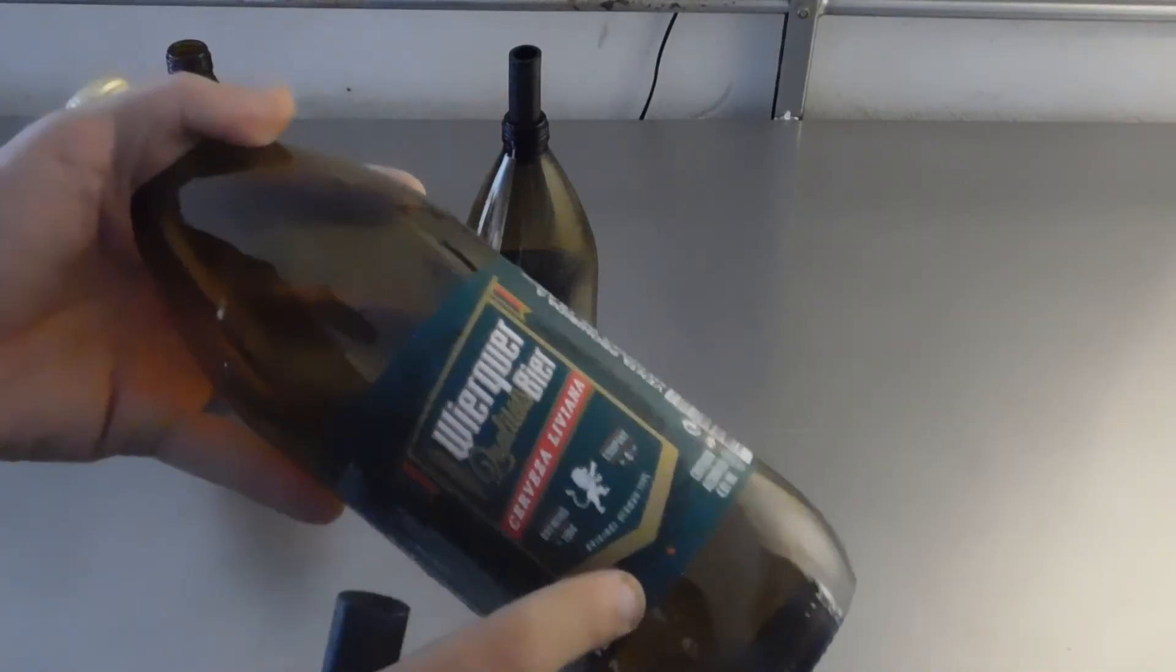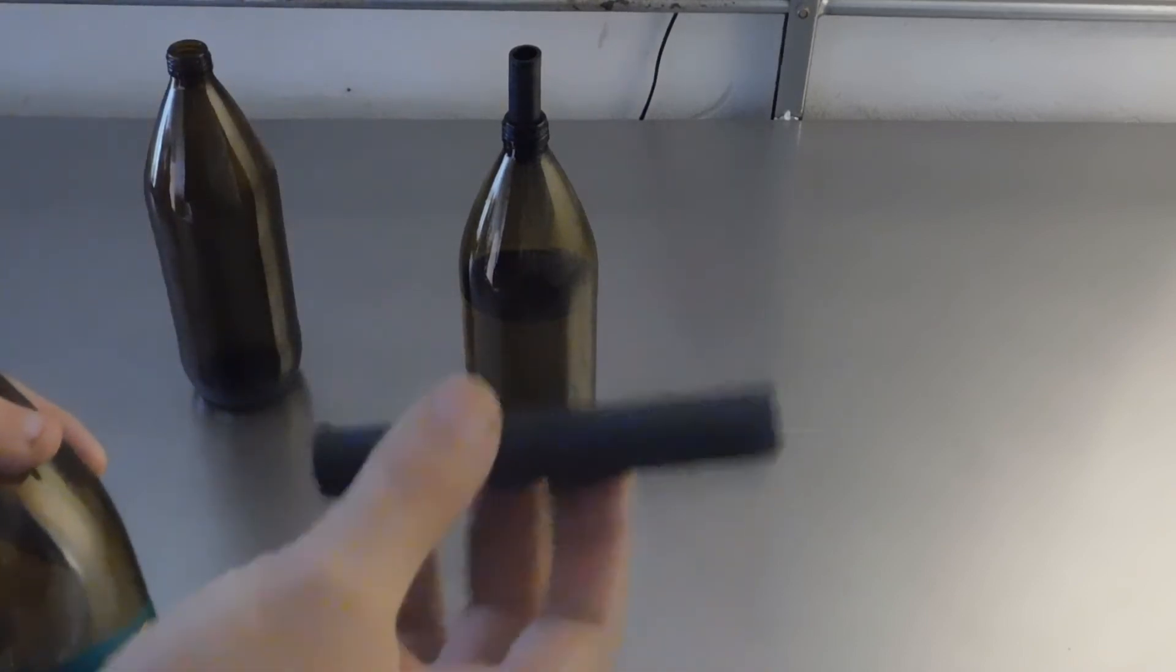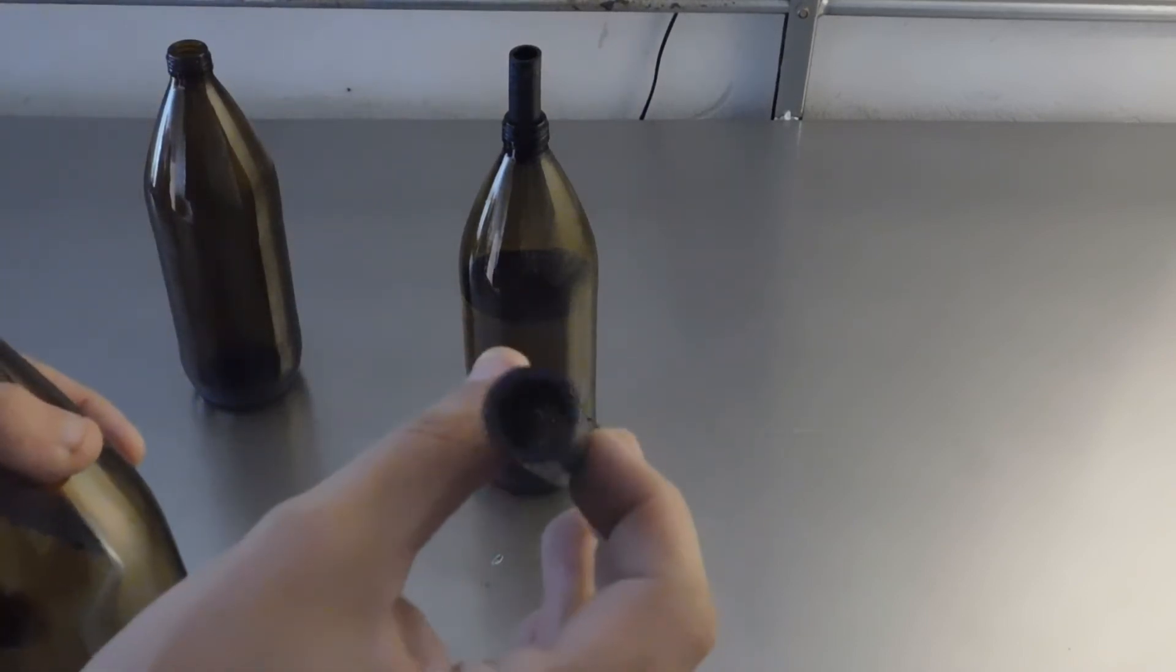Como resumen final, lo que necesitamos para obtener el vórtice fueron dos botellas de cerveza de esta marca. Un pedazo de caño de este negro, del diámetro ese que ya les mostré.